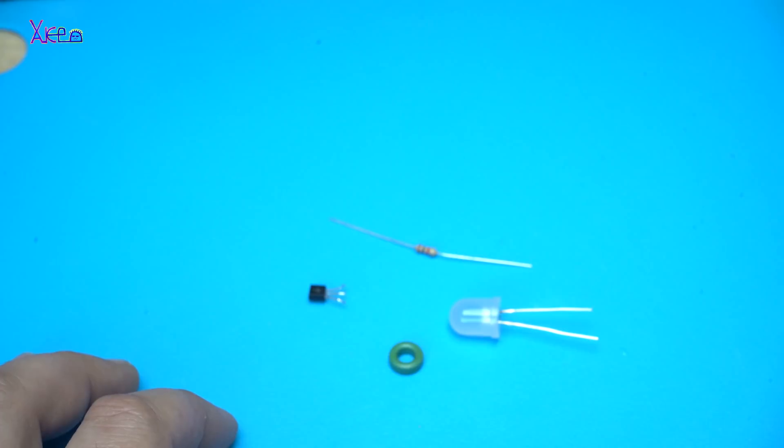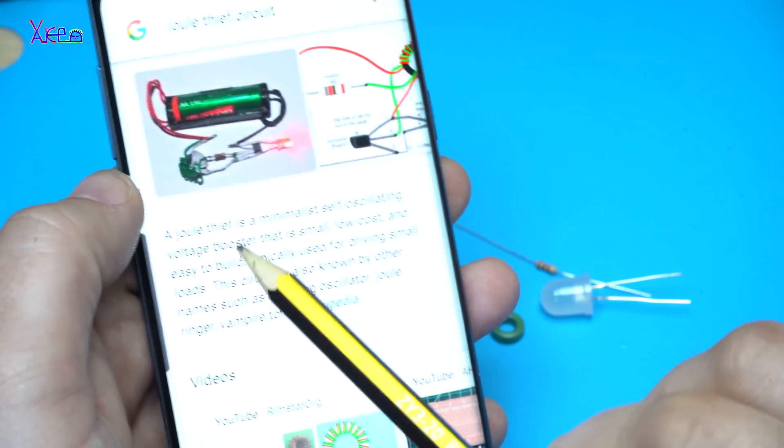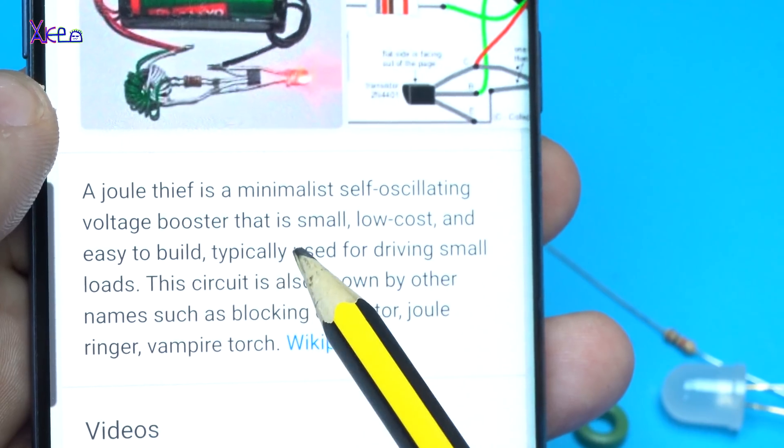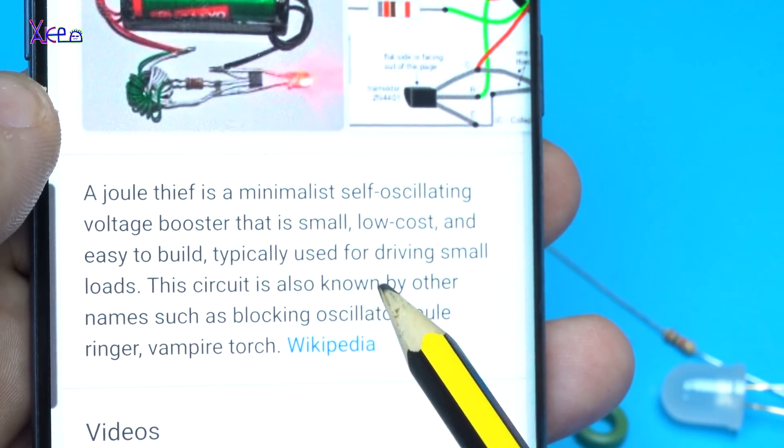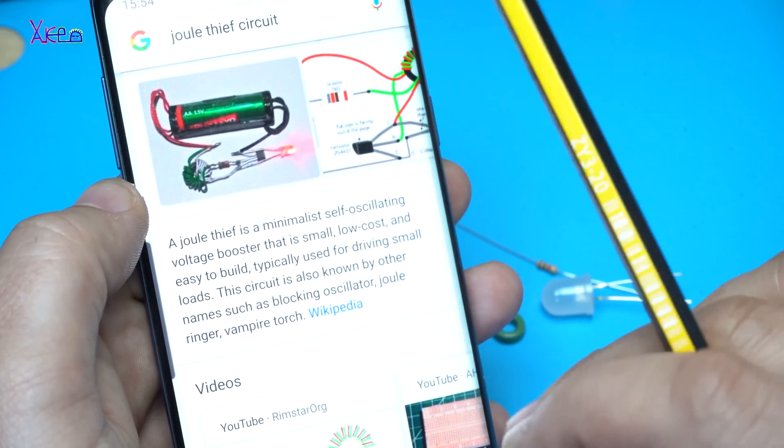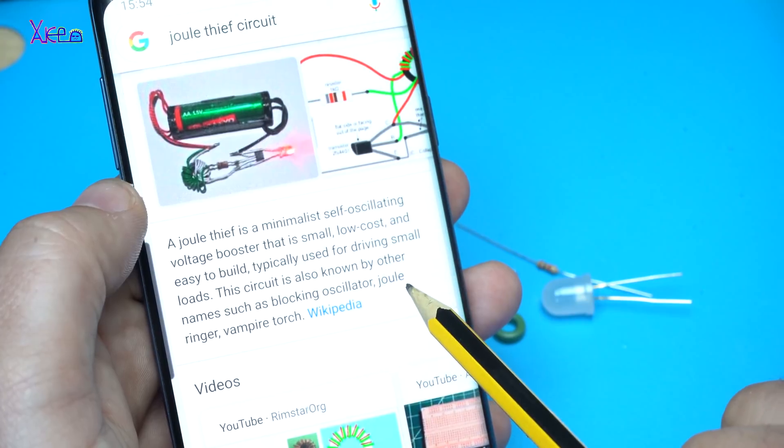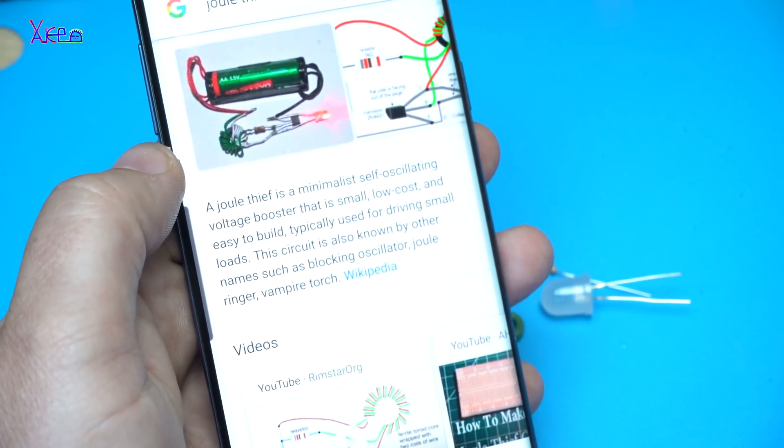And these are stuff for making a simple circuit, called Joule Thief. What is a Joule Thief? A Joule Thief is a minimalist, self-oscillating voltage booster that is small, low cost and easy to build. Typically used for driving small loads. The circuit is also known by other names such as blocking oscillator, Joule ringer or Vampire torch.